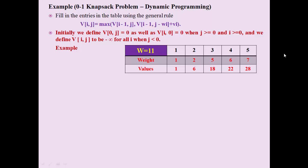For example, we have five different objects, each with some weight and value. Object one has weight 1 and value 1; object two has weight 2 and value 6; object five has weight 7 and value 28. The capacity constraint W equals 11. In the 0-1 Knapsack Problem, we cannot divide objects into parts — either we take the full object (1) or we leave it behind (0).